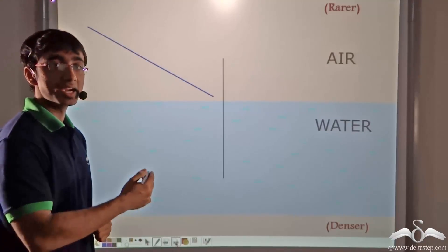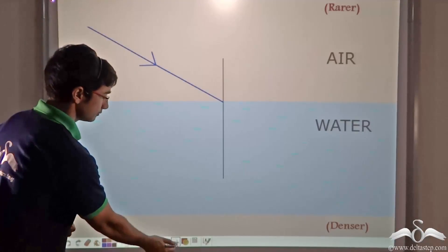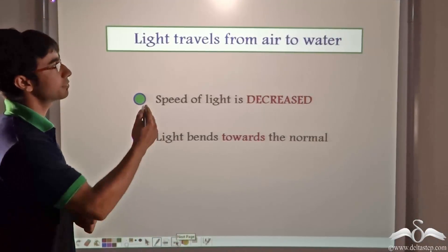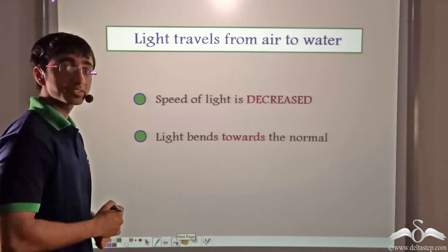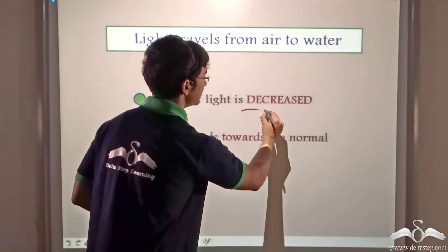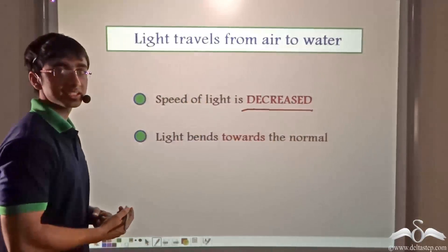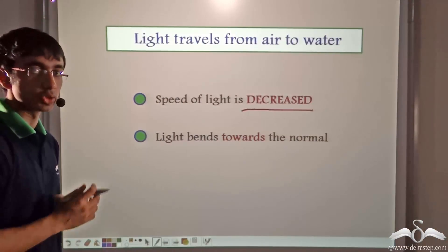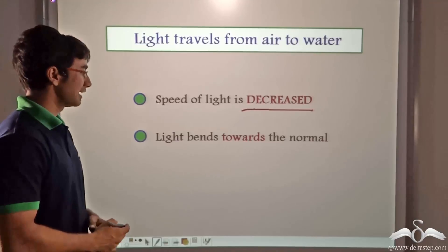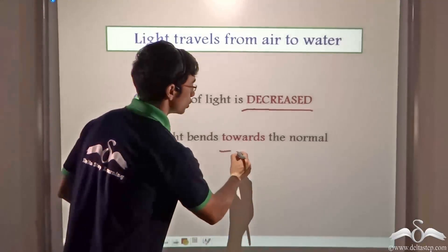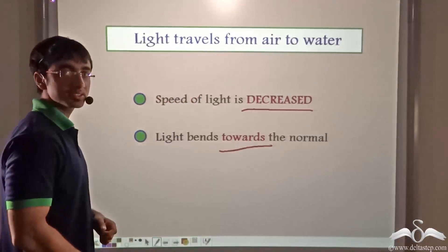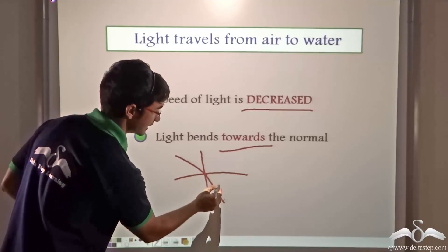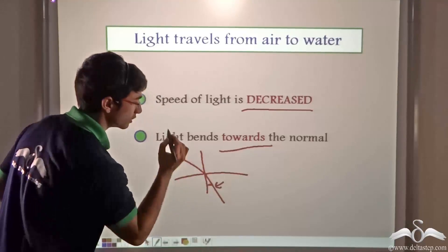When light travels from air to water, the speed of the light is decreased — as we saw in the case of the car moving from the smooth road to the muddy road. We also see that the light bends towards the normal; in other words, it shifts towards the normal.